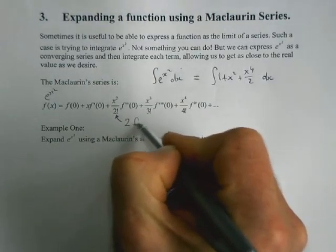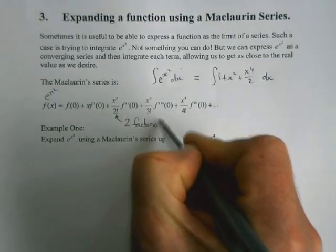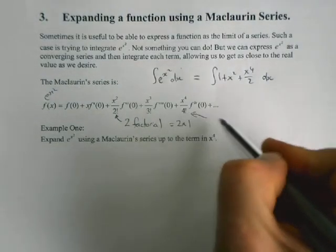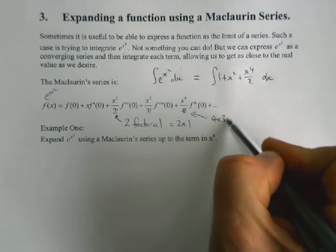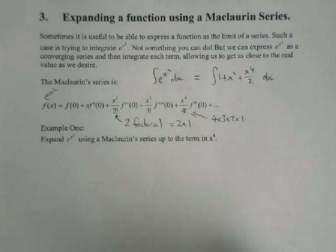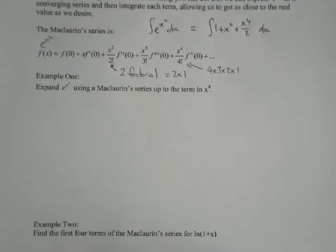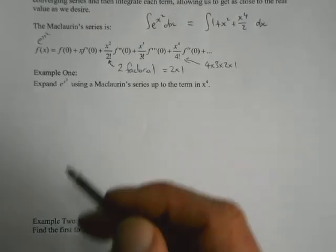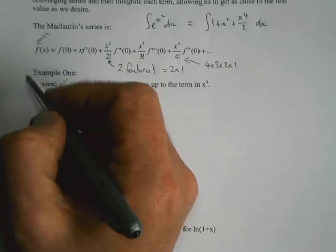So this 2 with the splat after it is 2 factorial, which is 2 times 1. And 4 factorial is 4 times 3 times 2 times 1. There's a button on your calculator that does it for you. So now that I've given you all the basic bits and pieces, let's have a go at actually trying to work out what the McLaren series is for e to the x squared.